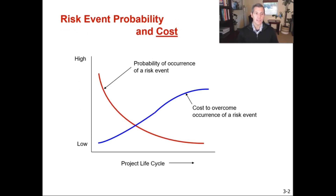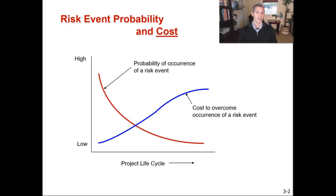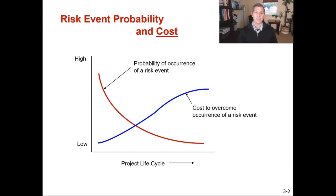For risk event probability and cost, the blue line is cost and the red line is probability. We want to catch errors in our project early. We're more likely to catch errors early in the project versus late, and if we do catch those errors early it's not going to cost us much to correct them. But if we're already halfway through a construction project and we realize something is wrong way back at the start, it's going to cost us more later in the product lifecycle or construction cycle to overcome the occurrence of that risk event.